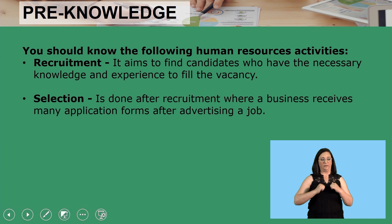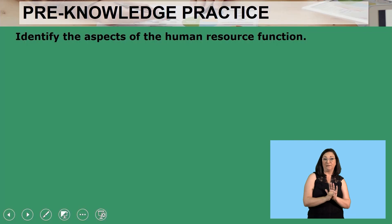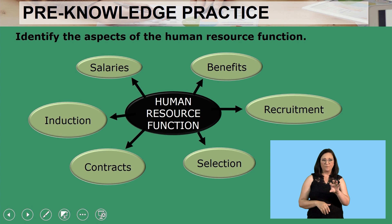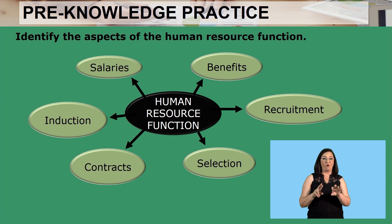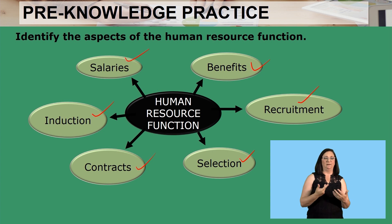Let's see if you still remember what was just mentioned. You should be able to identify the aspects of the Human Resource function — this is a quick pre-knowledge practice. The Human Resource aspects include: benefits, recruitment, selection, contracts, induction, and salaries. All of those are aspects of the Human Resource function.